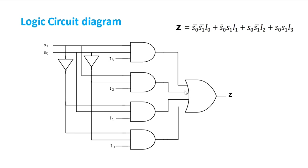This is the logic circuit diagram for the 4-to-1 multiplexer. s0 and s1 are connected to NOT gates to generate their complements. For the first combination, s0_bar, s1_bar, and i0 are connected to an AND gate. The second combination uses s0_bar, s1, and i1. The third and fourth combinations follow similarly with their respective AND gates. All four AND gate outputs are then connected to an OR gate, which gives the final output.